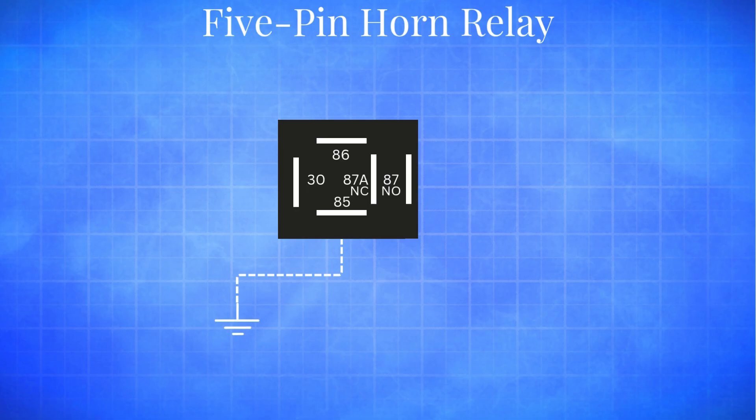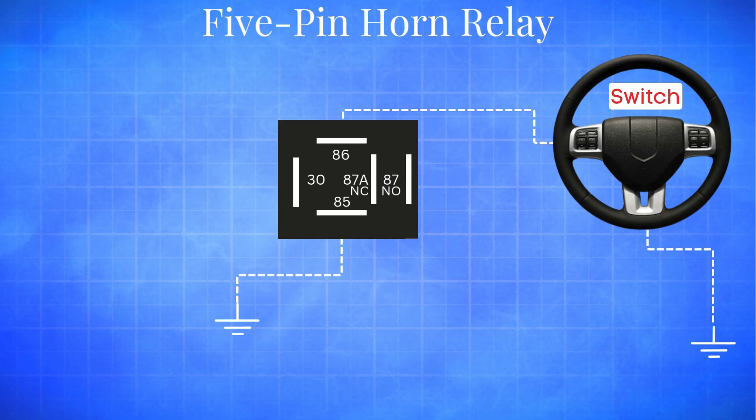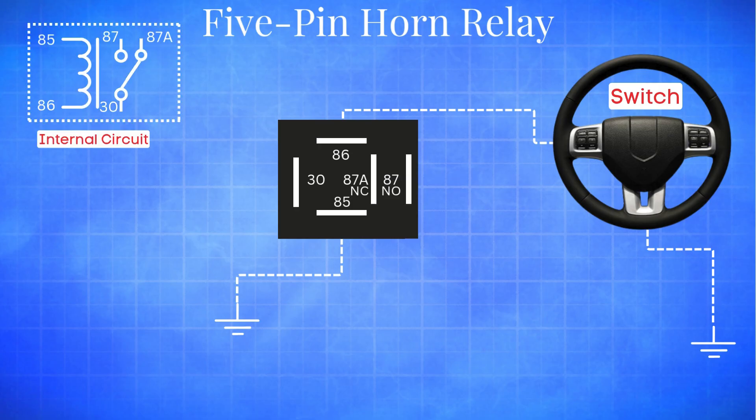Pin 85 is connected to ground. Pin 86 is connected to the horn switch or a control signal. These two pins energize the internal coil, same as in a 4-pin relay.